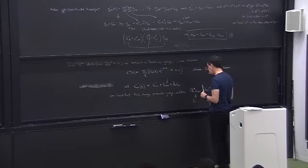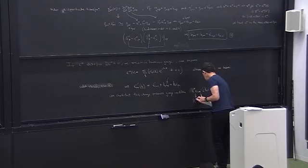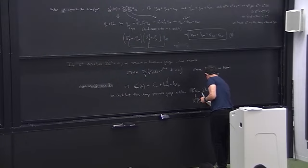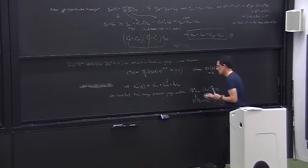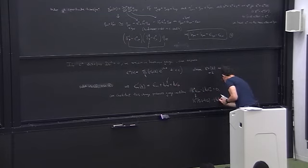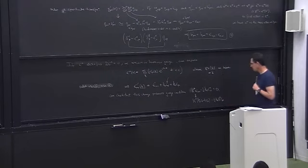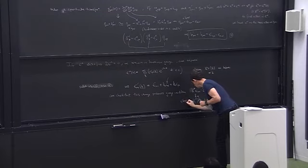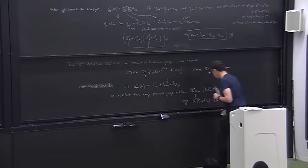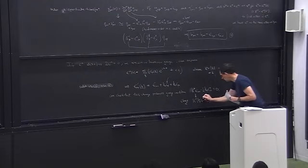Since k squared is zero, k mu k nu will be zero. Looking at the gauge condition, the change is k mu c nu plus k nu c mu, and the change in the trace is just k dot c times two. The k squared term is zero, so this term cancels, and the gauge condition is preserved.